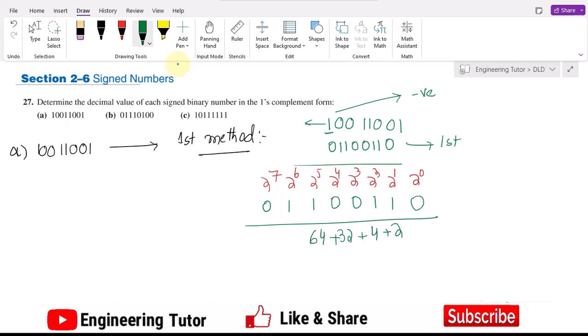Now adding these: 64 plus 32 is 96, 96 plus 4 is 100, and then 102. That is 102, and previously we have seen that it would be a negative number due to this bit. Therefore it will be minus 102. This is method number 1, where the answer is minus 102.